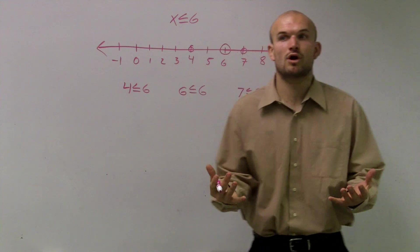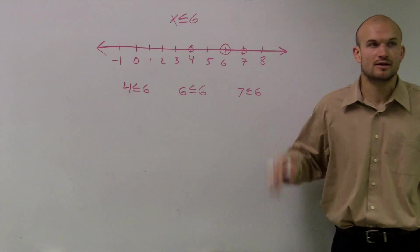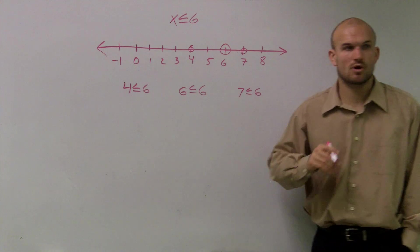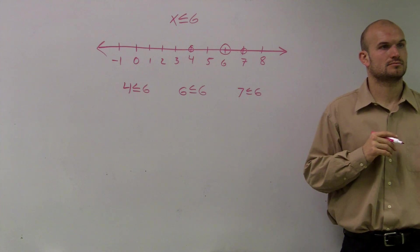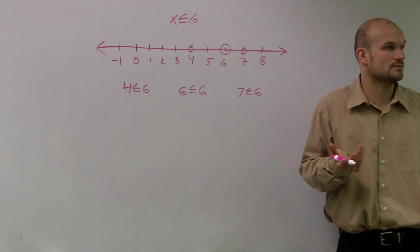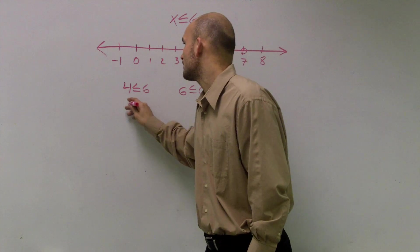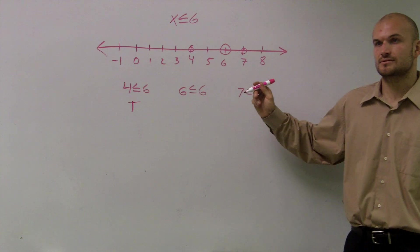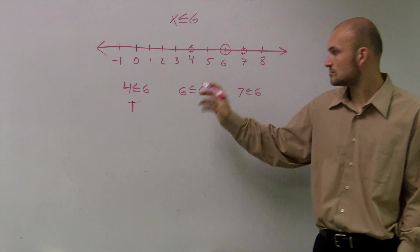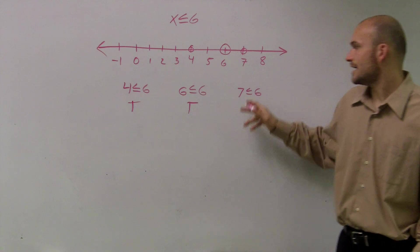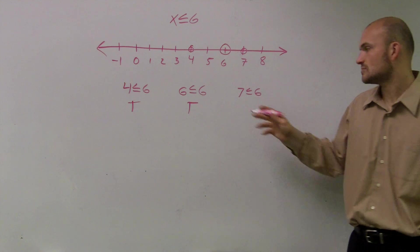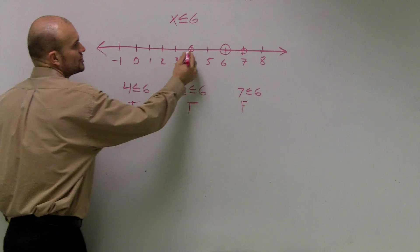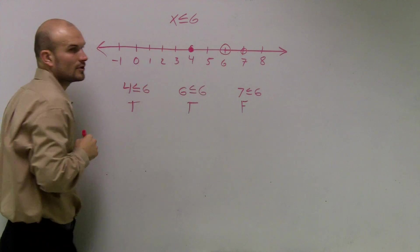So remember, just like the warm-up, what you're going to do is determine which one is true and which one is false. So the first one: is 4 less than or equal to 6? True. Is 6 less than or equal to 6? Equal to — so it is true. And is 7 less than or equal to 6? That is false. So what we do is: when we have a true point, we shade it in.